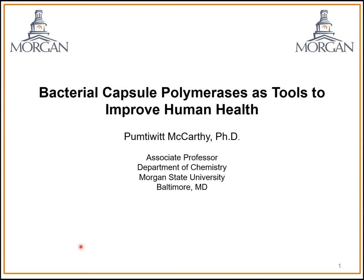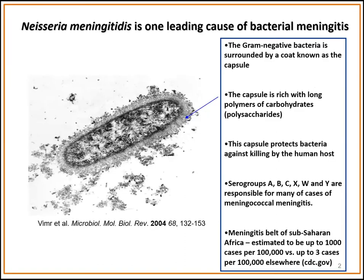Thank you, Matt, and thank you to the organizers for giving me the opportunity to present my research today. The focus of our group is studying Neisseria meningitis, which is one of the leading bacterial causes of meningitis. These gram-negative bacterial pathogens contain a polysaccharide-rich capsular coat, and some of the polysaccharides found in this capsule define the individual serogroups of Neisseria.